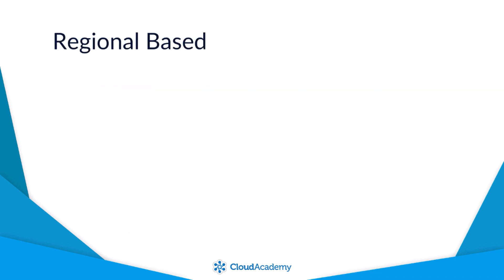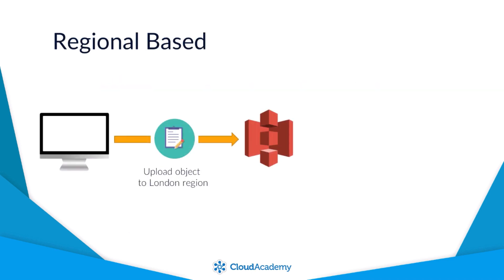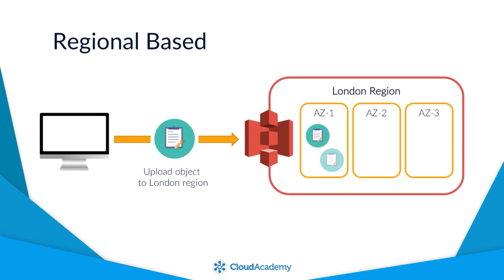When data is uploaded within S3, you as the customer are required to specify the regional location for that data to be placed in. By specifying your region, Amazon S3 will then store and duplicate your uploaded data multiple times across multiple availability zones within that region to increase both its durability and availability.